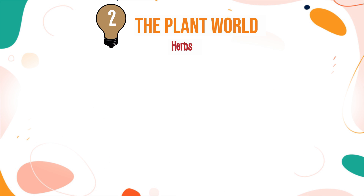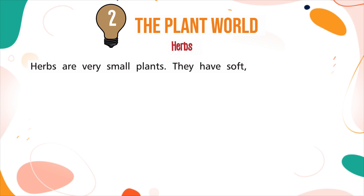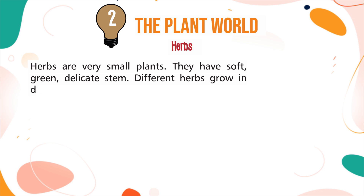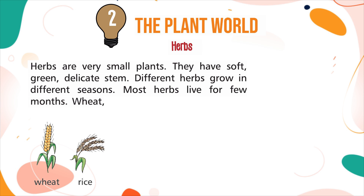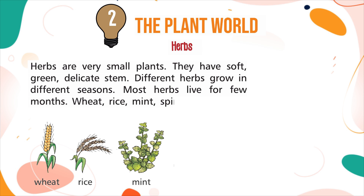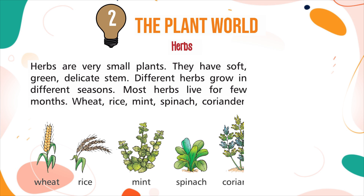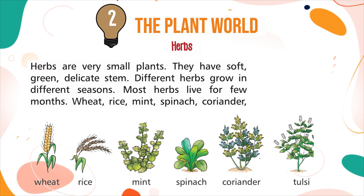Herbs are very small plants. They have soft, green, delicate stems. Different herbs grow in different seasons. Most herbs live for a few months. Wheat, rice, mint, spinach, coriander, tulsi, etc. are some common herbs.